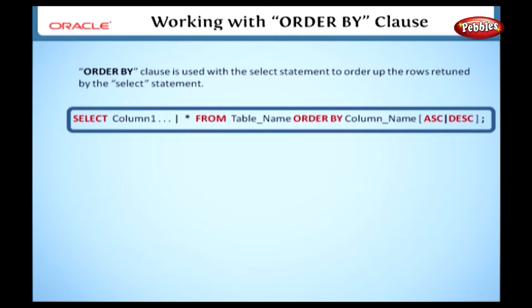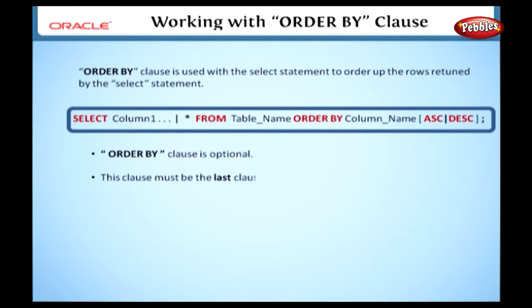In this general format, ASC means ascending and DESC means descending. Generally, in a SELECT statement, the ORDER BY clause is optional. If we want to use this clause in a SELECT statement, this clause must be the last clause.